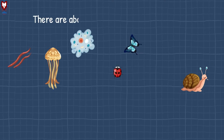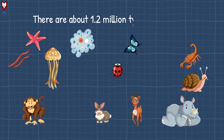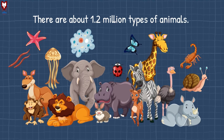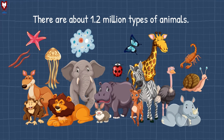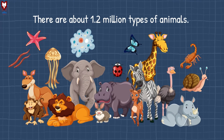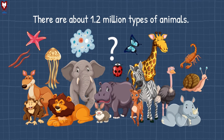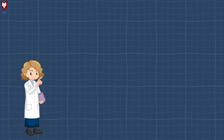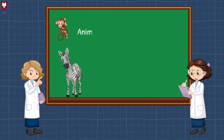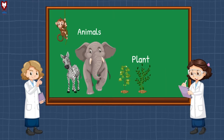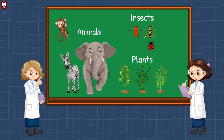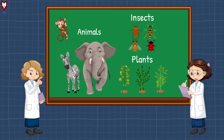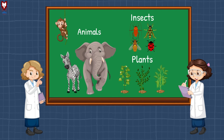There are about 1.2 million types of animals. How do we think about this? Scientists and biologists, who study animals, plants and insects, count all species.